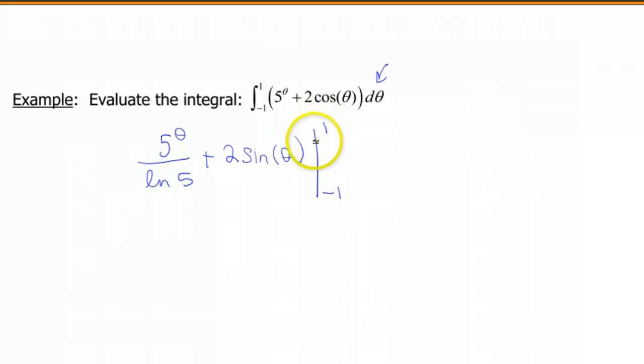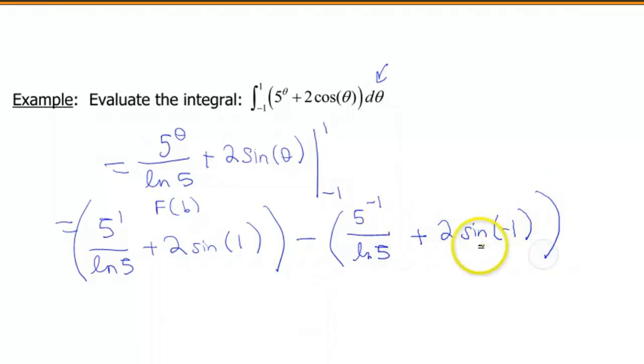And now we're gonna evaluate this from negative 1 to 1. And again, we're gonna have some lovely answers here. So we're gonna have 5 to the first divided by the natural log of 5 plus 2 sine of 1. So that's one of our numbers. And then minus, we're gonna have 5 to the negative 1. So again, I got this top one by doing my f of b, the top endpoint, which is 1. Now I'm gonna go ahead and evaluate my antiderivative of negative 1, my lower endpoint. So that's 5 to the negative 1 over ln of 5, plus 2 sine of negative 1.